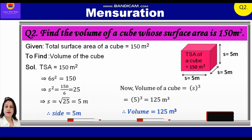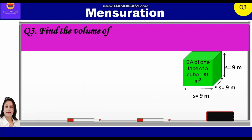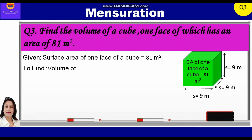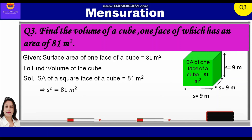Now let's take up question number 3. Find the volume of a cube, one face of which has an area of 81 m². Given: the surface area of one face of the cube is equal to 81 m². We know that area of a square face is S². So S² = 81 m², and S = √81 = 9 meters. So the side of this cube is equal to 9 meters.